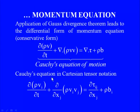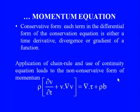This equation was first derived by the French mathematician Cauchy and is referred to as Cauchy's equation of motion. In Cartesian tensor notation: ∂(ρv_i)/∂t + ∂(ρv_i v_j)/∂x_j = ∂τ_ij/∂x_j + ρb_i. The expanded form can be obtained in different coordinate systems.